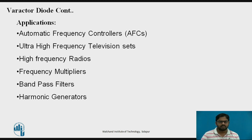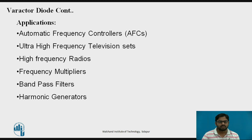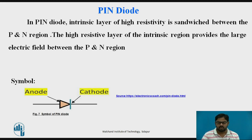Applications of the Varactor Diode include: use as an automatic frequency controller, use in high frequency receivers, use as a variable tuner in tank circuits, and use in high frequency radios as a frequency multiplier. It is also used as a bandpass filter and as a harmonic generator — meaning you can double, triple, or quadruple the frequency using the Varactor Diode.